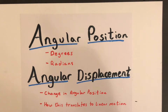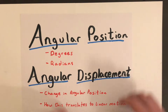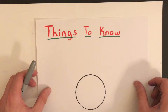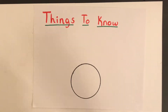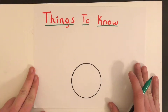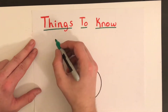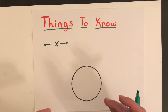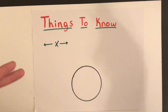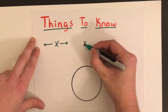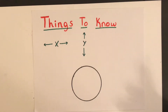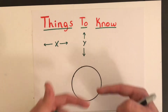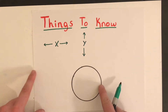Before we get too in-depth, there are a few ground rules to cover. If something is moving in the x-direction, we know it's moving horizontally — either to the left or to the right. The y-direction means something is moving either upwards or downwards. So we've got x for left and right, and y for upwards and downwards. What about angular position?